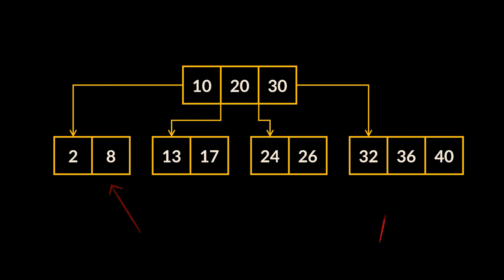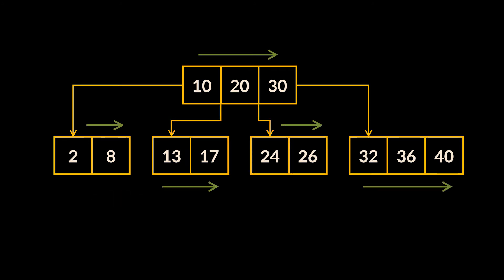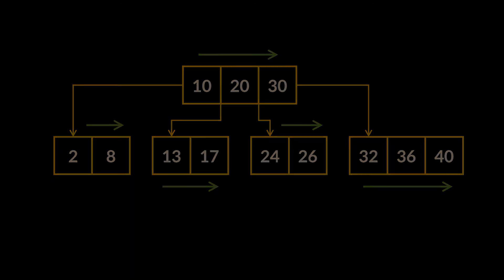All the values inside the root's left subtrees are smaller than the root, and all the values inside the root's right subtrees are greater than the root. Because a single node can store multiple keys, any child node sitting between any two keys should only contain key values that are greater than their preceding key and smaller than their following key. The nodes highlighted in red store only elements between 10 and 20, or 20 and 30 respectively. Also, elements stored inside the same node should be sorted in ascending order — smallest to the far left, biggest to the far right.